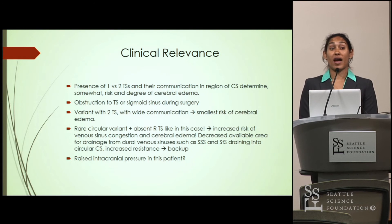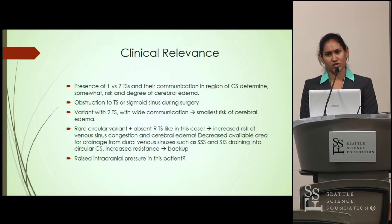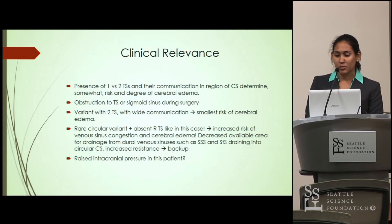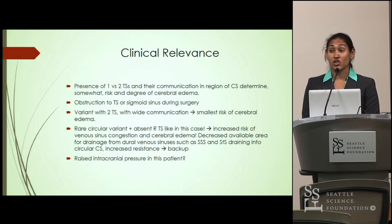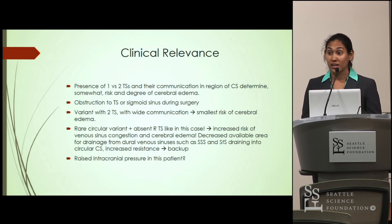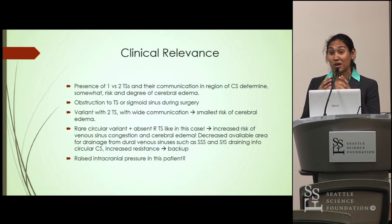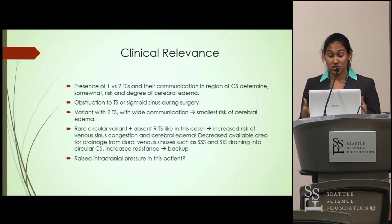What is the clinical relevance of variations to the confluence of sinuses? Depending on whether you have one or two transverse sinuses, or whether you have a wide or narrow communication, it will determine the risk and degree of cerebral edema. If there isn't proper drainage, blood will back up and cause cerebral edema and sinus venous congestion. Since the brain is enclosed in the skull, there is very little room for expansion, making this quite important. Two transverse sinuses with a wide communication gives the smallest risk of cerebral edema.